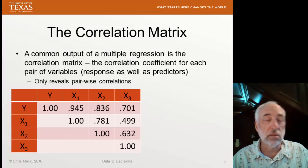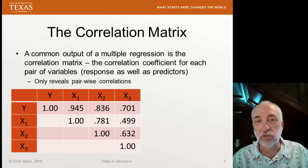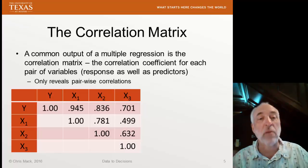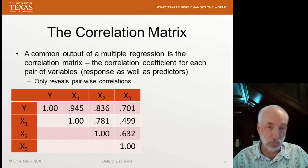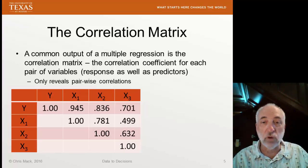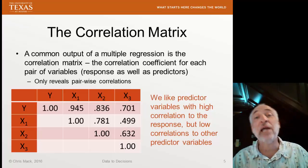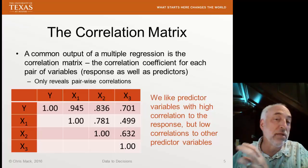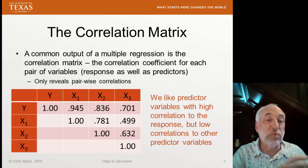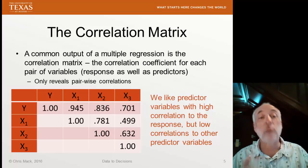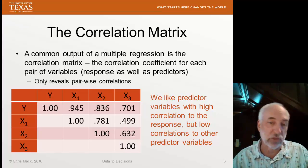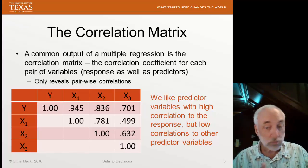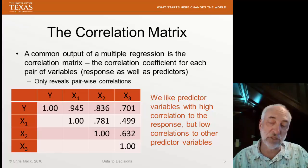Many linear regression software packages will automatically generate a correlation matrix for your inspection. What we look for is high correlation with the response — that's what we want. We want a predictor that does a good job of predicting the response. But you'd also like low correlations between the predictor variables, though sometimes we don't achieve that.